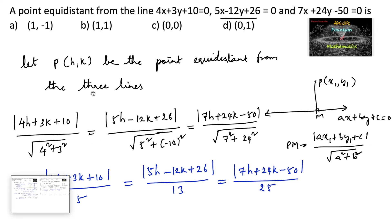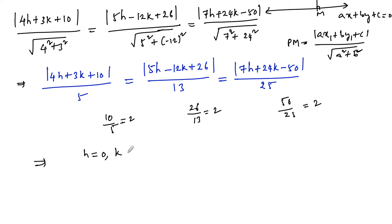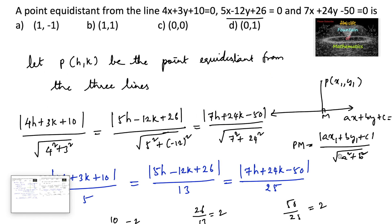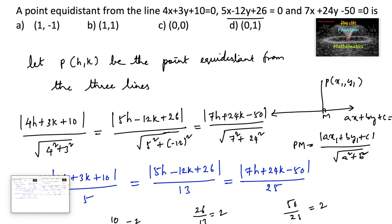We can observe that the constant terms give the same ratio: 10/5 = 2, 26/13 = 2, and 50/25 = 2. This equality holds when h = 0 and k = 0. Therefore, the equalities of equations hold good, and hence the point equidistant from the three lines is the origin. So the answer is option C.